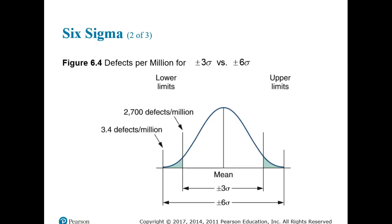Figure 6.4 depicts the statistical sense of Six Sigma. In this example, one million passengers pass through St. Louis airport with checked baggage each month. A Six Sigma program for baggage handlers results in only 3.4 passengers with misplaced luggage, whereas a more common three-sigma program would result in 2,700 passengers with misplaced bags every month.